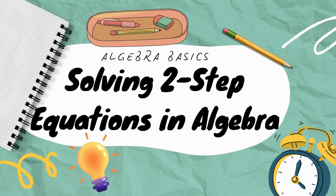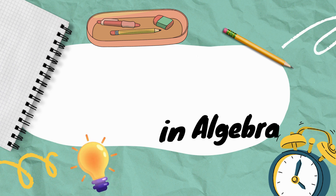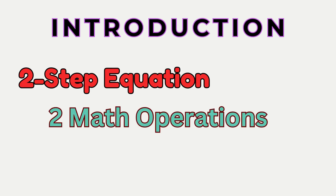Welcome back to Learner's Academy. In our last videos, we solved equations having only one arithmetic operation in them. But today, we're leveling up. We're diving into two-step equations, where things get a little more interesting. We're going to solve equations that have two math operations in them — one addition or subtraction operation, and one multiplication or division operation. This will help you solve equations having even more arithmetic operations.